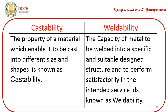Castability is the property of a material which enables it to be cast into different sizes and shapes. Weldability is the capacity of the metal to be welded into a specific and suitably designed structure and to perform satisfactorily in the intended service. Materials with good weldability can be easily subjected to welding.